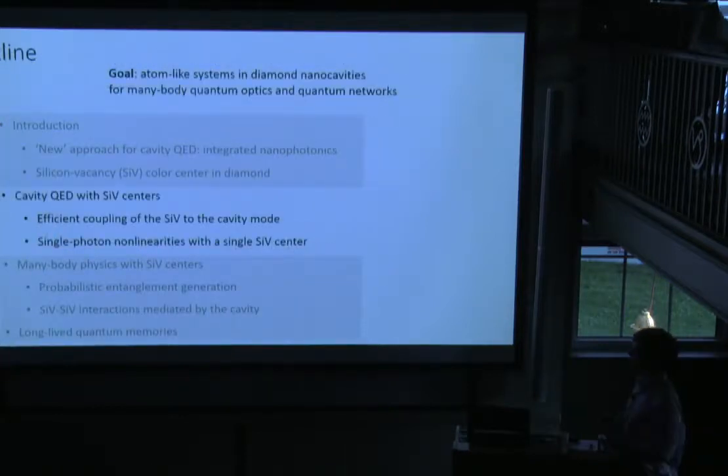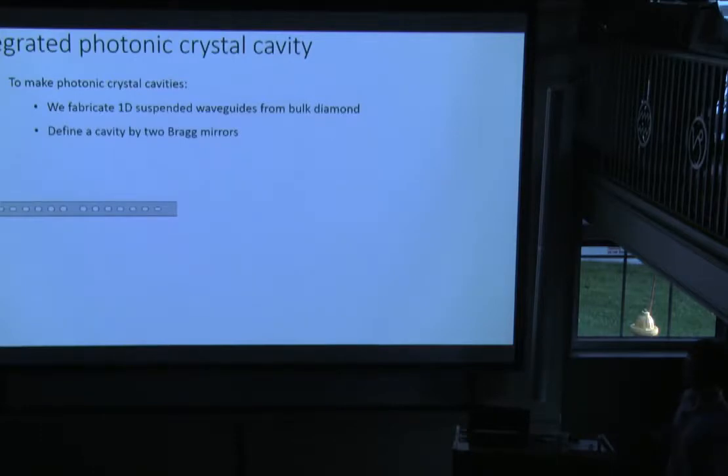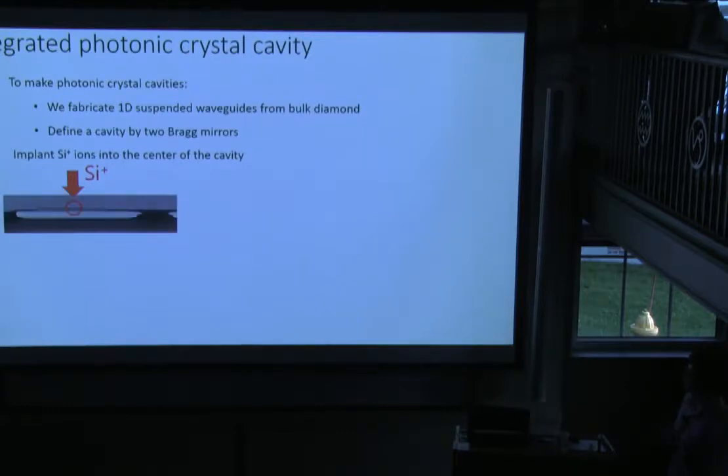To make our photonic crystals, we first fabricate one-dimensional suspended waveguides from bulk diamond. Then we define two Bragg mirrors by making holes. To integrate the SiV center into the photonic crystal, we implant silicon ions in the center of the cavity. This guarantees that we hit the maximum of the cavity field to achieve the highest cooperativity we can. In real life, a device looks like this. We have suspended waveguides, holes which are mirrors, and the cavity somewhere in the middle.